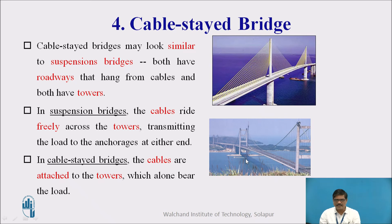For example, in a suspension bridge the load is taken by the suspenders, transferred to the main cable, and these main cables are anchored at the ends — so the load is transferred to the anchors. Whereas in cable-stayed bridges, the loads are directly transferred to the towers via the cables. These cables take the load and are tied to the interior tower supports, so the load is directly transferred to the towers.